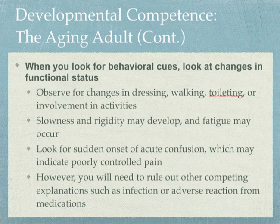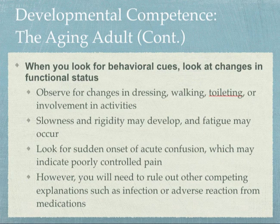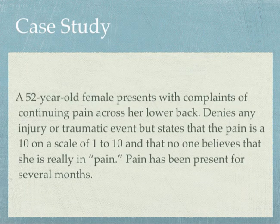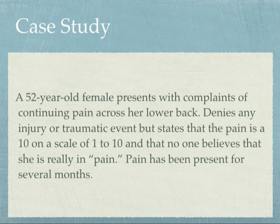Look at behavioral cues when your patient gets up - are they slow, do they look fatigued? In older adults, sudden onset of acute confusion is highly linked with infection, but poor pain control is another factor to consider. There is a sample documentation chart showing what you would typically document for your patient. There's also a case study from the textbook that goes through the PQRST acronym for assessing pain. If you have any questions, please let me know - thanks, and have a great day.